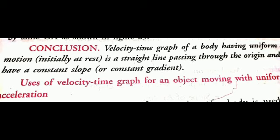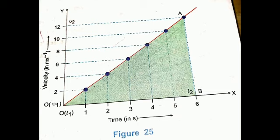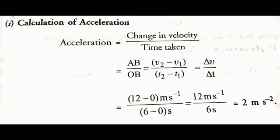Now I will discuss the uses of the velocity-time graph for an object moving with uniform acceleration. Please refer to figure 25. The first use is the calculation of acceleration. As we know, acceleration = change in velocity / time taken. From the figure, change in velocity is given by AB = v2 − v1, and time taken is OB = t2 − t1. So we have (12 − 0) / (6 − 0), and finally acceleration = 2 meters per second squared.